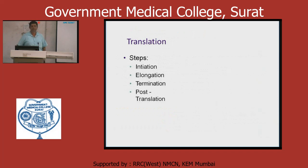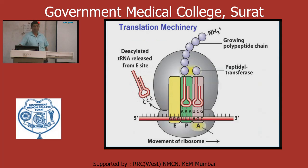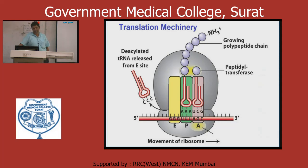Translation has various steps: initiation, elongation, termination, and post-translational modification. The translation machinery — the ribosome has a large subunit and a small subunit. The red strand like a rope is mRNA. The green, yellow, and pink boxes are particular sites, and the hook shape is tRNA. The magenta/violet color represents particular amino acids which tRNA brings from the cytoplasm parallel to the mRNA.